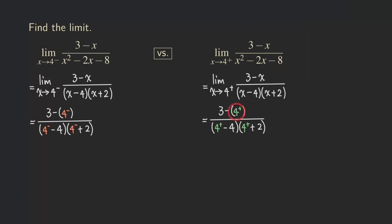Let's look at this situation. When we have 3 minus 4, we get negative 1 — the numerator is approaching negative 1. Now for the denominator: we are having 4 approaching 4 from the left side, subtracting the actual number 4. Because when we approach 4 from the left, we have a sequence of numbers less than 4. When we subtract the 4, we get a negative number, and that is approaching 0 from the left side — approaching 0 from the left.